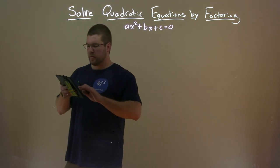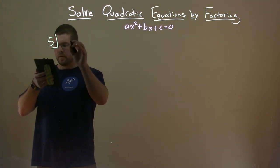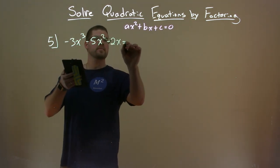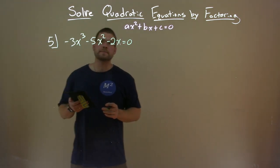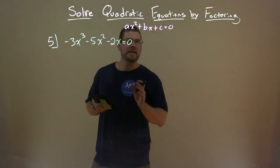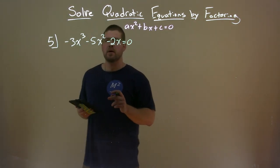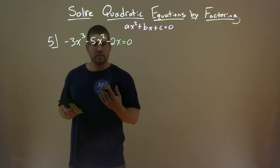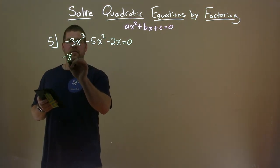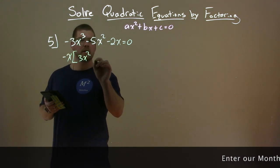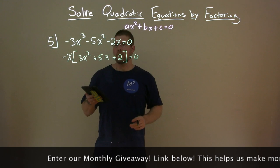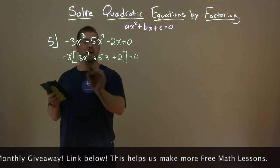Now let's try another example — number five, and this one's a doozy. We have negative 3x to the third power minus 5x squared minus 2x equals zero. We have a higher degree polynomial. Notice we have x to the third, then x squared, then x. Can we make this look like a quadratic? There's an x in all three terms, so I'll pull out a negative x, since I want the leading coefficient to be positive. Pulling out negative x leaves us with positive 3x squared plus 5x plus 2 equals zero.